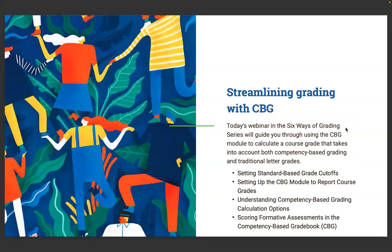Today's webinar in the Six Ways of Grading series will guide you through using CBG to calculate a course grade that takes into account both competency-based grading and traditional letter grades. We'll start by setting up the standards-based grade cutoffs, then set up the CBG module to report course grades, cover the calculation options in JMC's CBG module, and show you how to score formative assessments in competency-based grading to provide students with feedback to move learning forward.